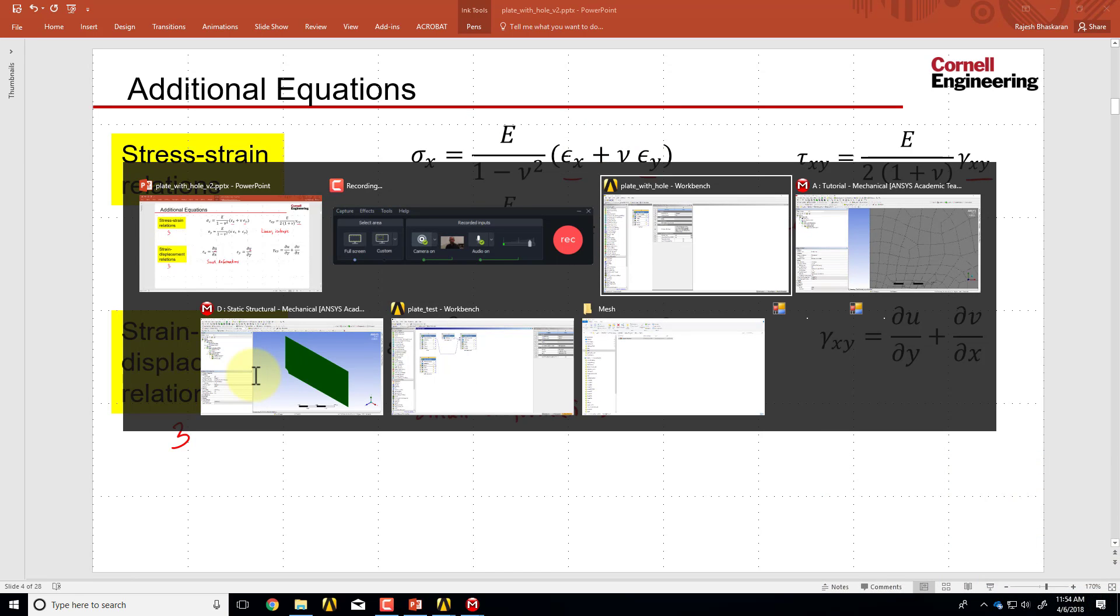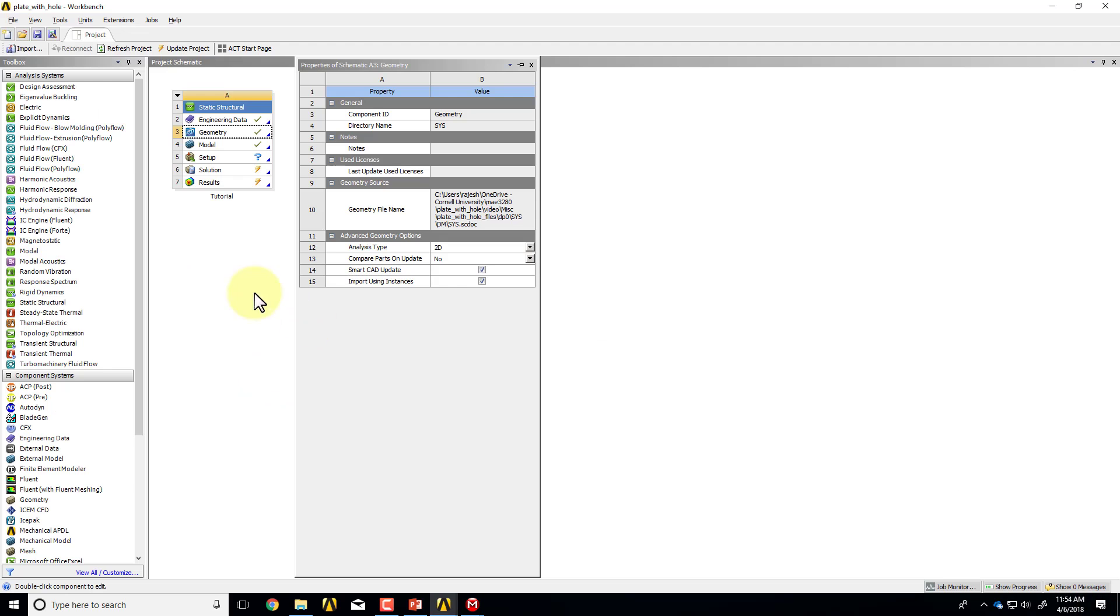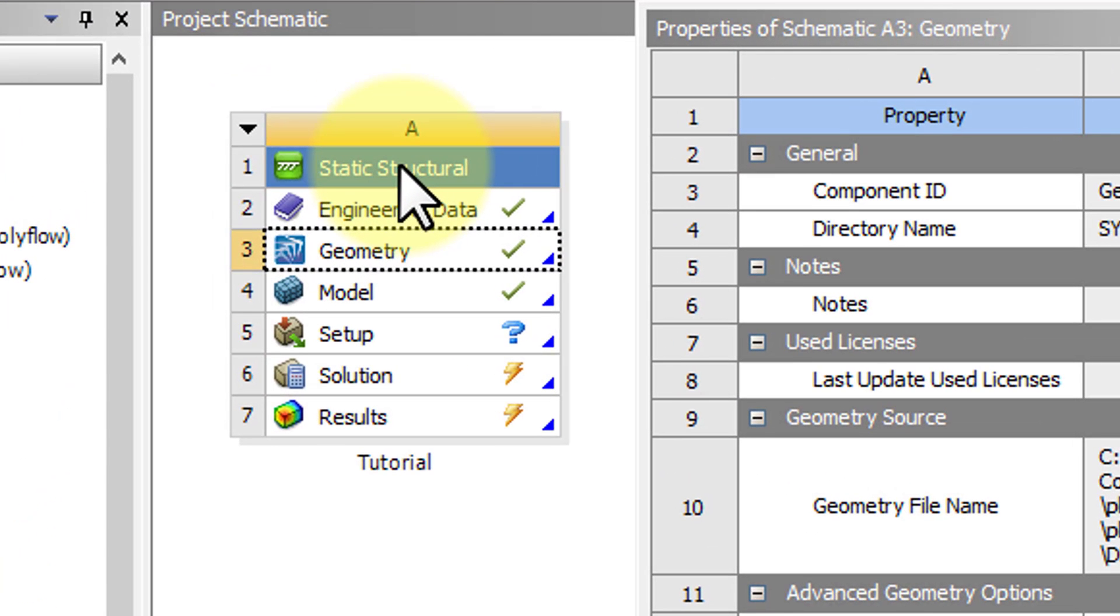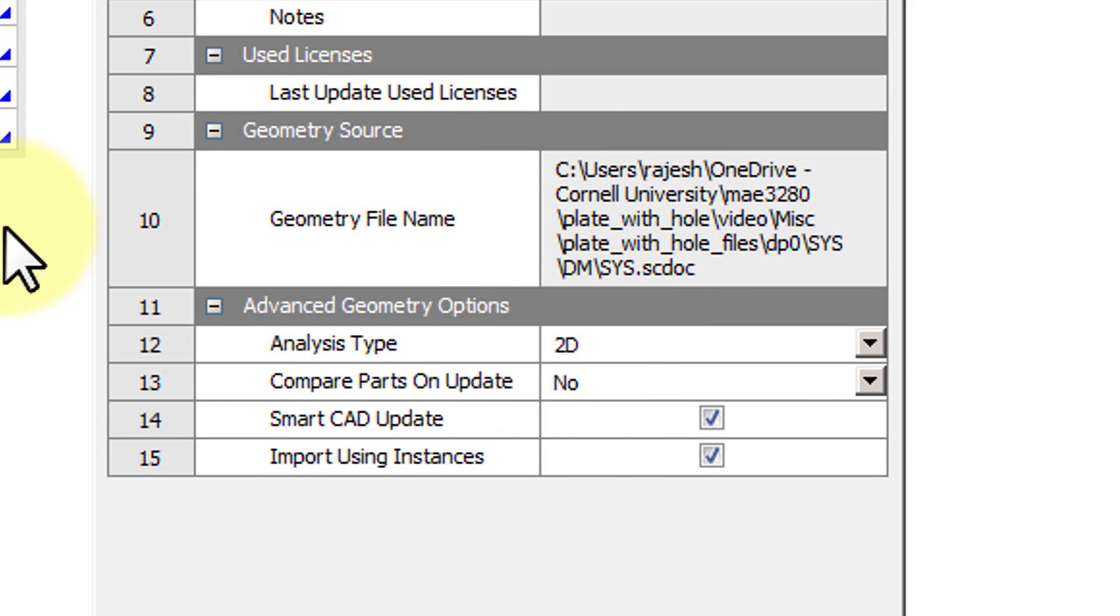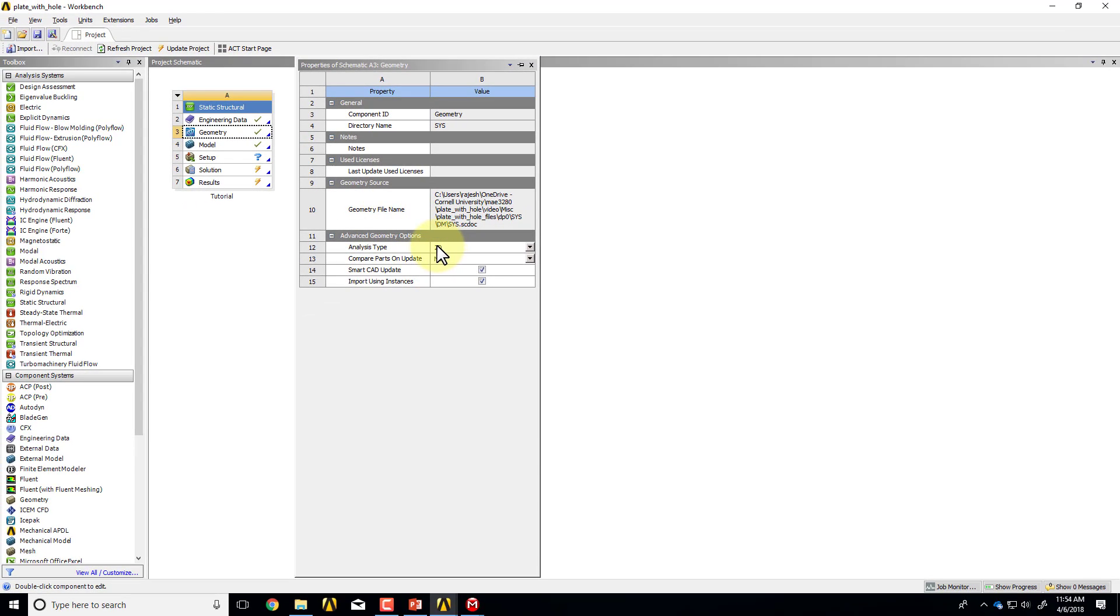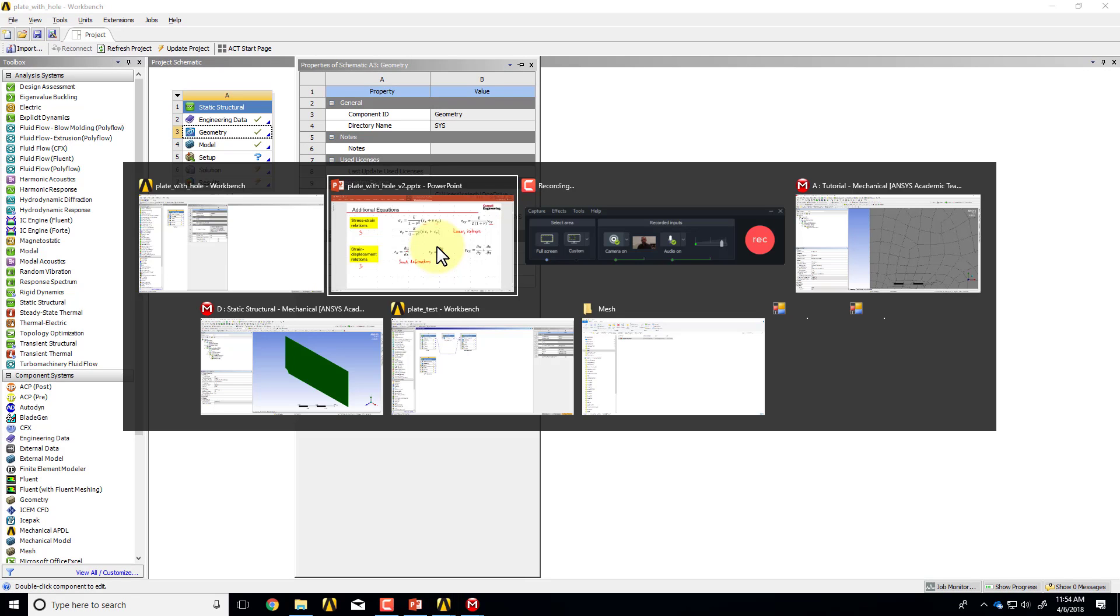If I go to the project page, now we set the analysis system to static-structural and the analysis type to 2D. It turns out ANSYS uses both these clues and it turns on these equations with no body forces.